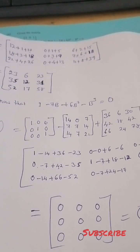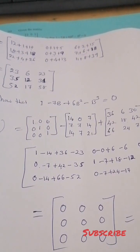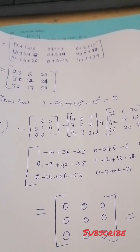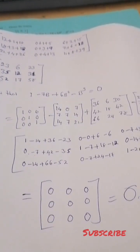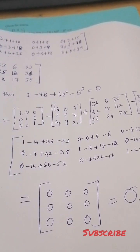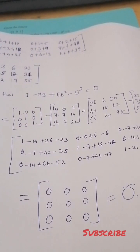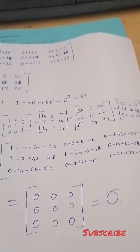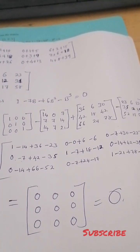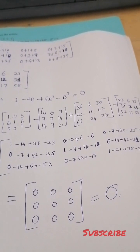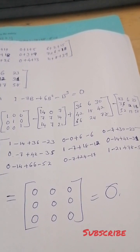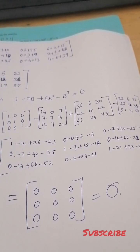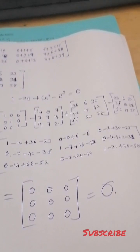We already have the identity matrix: 1, 0, 0, 0, 1, 0, 0, 0, 1. Minus 7B, which we have already solved, giving us: 14, 0, 7, 7, 7, 7, 1, 4, 1, 14, 7, 21.